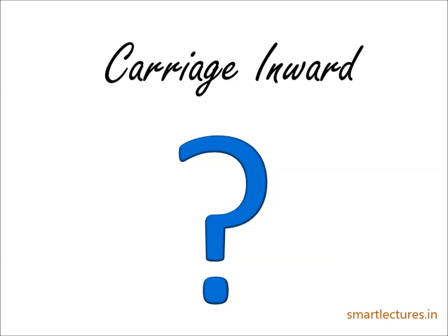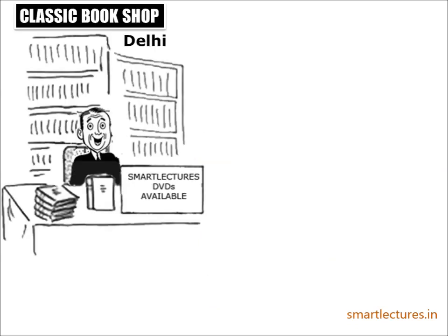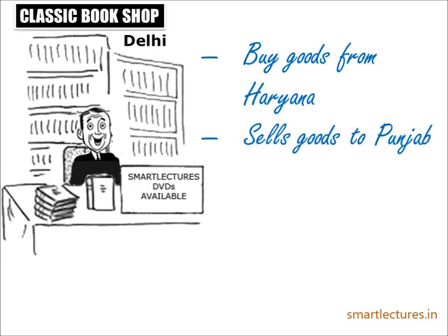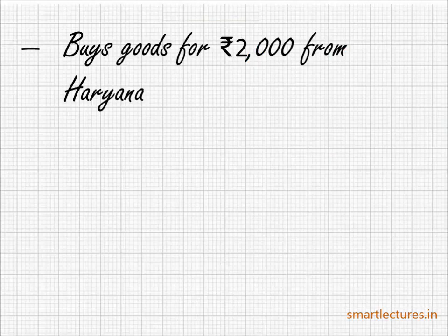Let me explain with the help of some examples. Suppose you are running a bookshop in Delhi and you are selling the books online. You buy the goods from Haryana and sell the goods to Punjab, but your business or your shop is established in Delhi. Suppose you buy the goods for Rs. 2000 from Haryana and then sell the goods to Punjab at Rs. 3000.